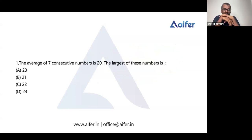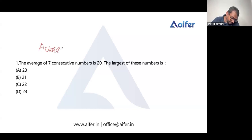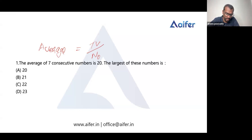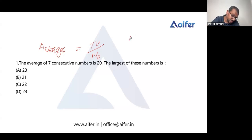Let's do a question on average. The average of seven consecutive numbers is 20. The largest of these numbers is what? We use the formula: average equals total value divided by number of observations. Let's consider the initial number as x.